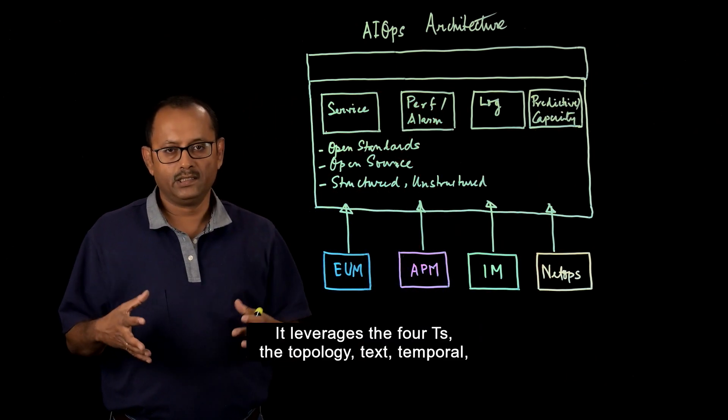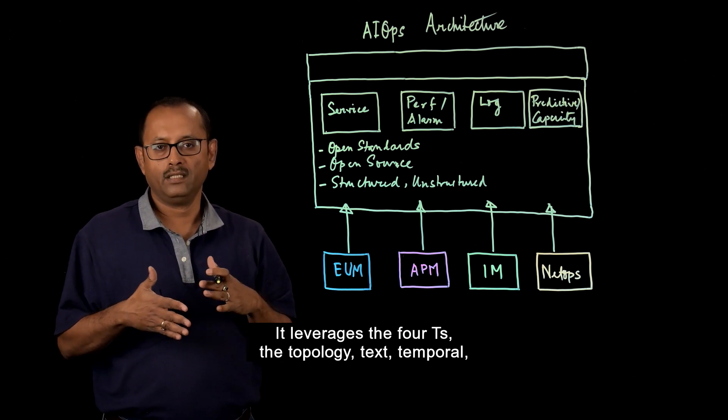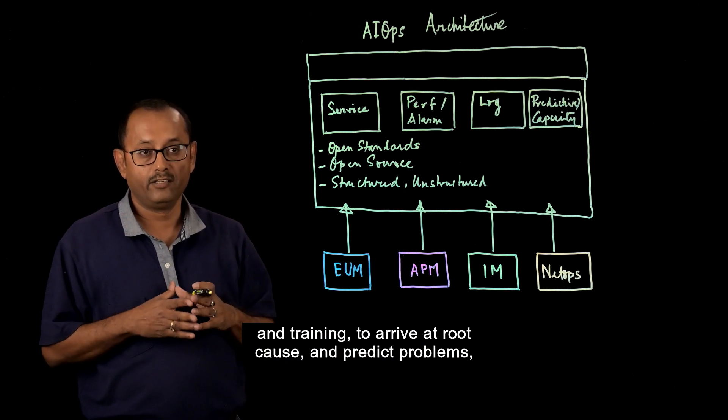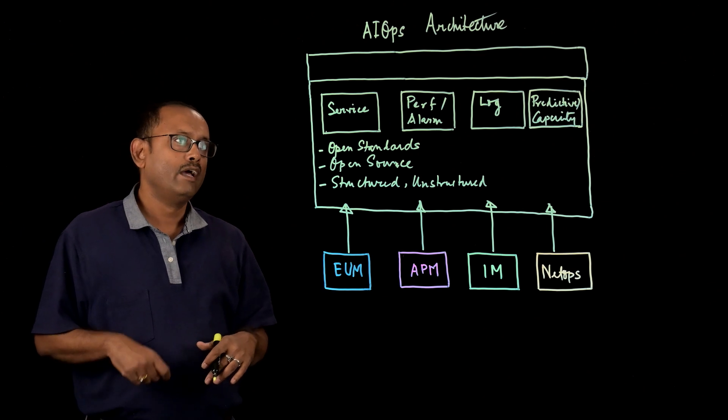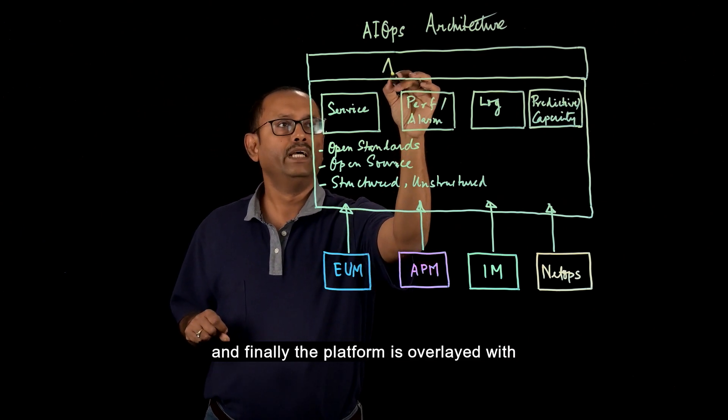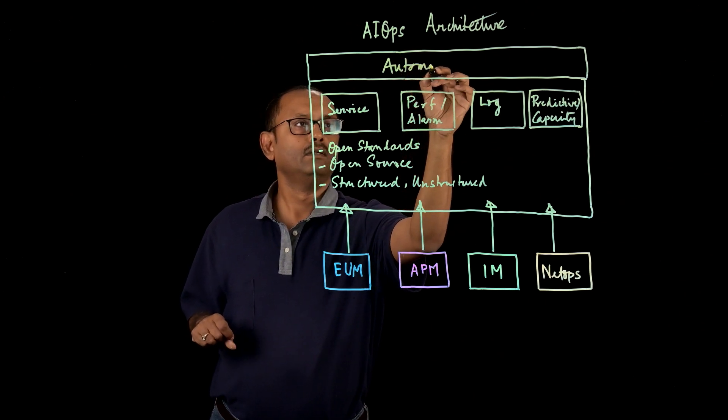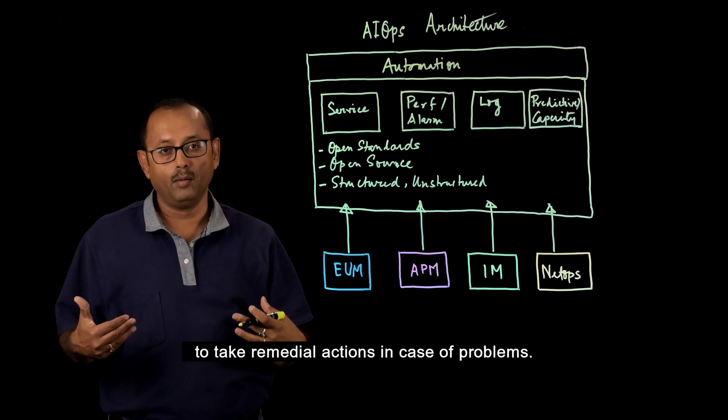It leverages the four T's: the topology, text, temporal, and training to arrive at root cause and predict problems. And finally, the platform is overlaid with the automation solution to take remedial actions in case of problems.